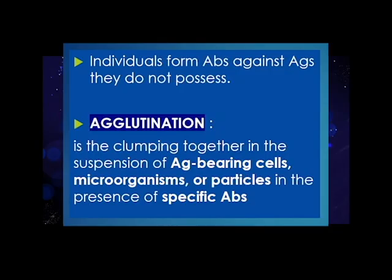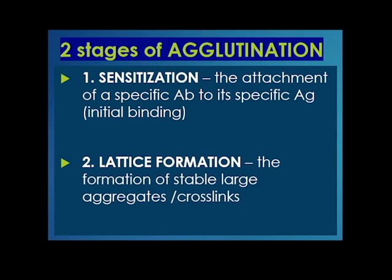Individuals form antibodies against antigens they do not possess. Agglutination is the clumping together in the suspension of antigen-bearing cells, microorganisms, or particles in the presence of specific antibodies.